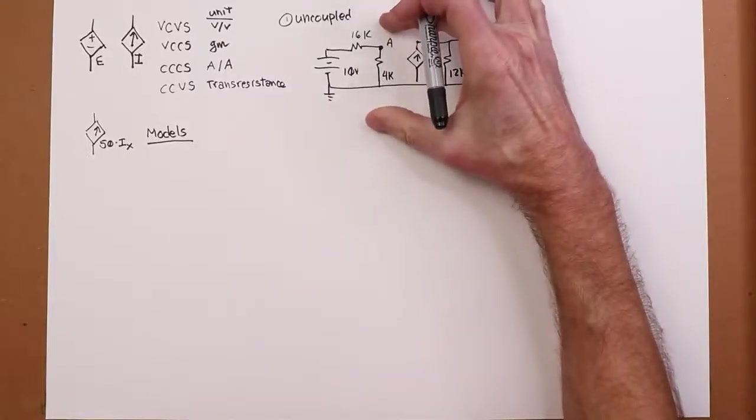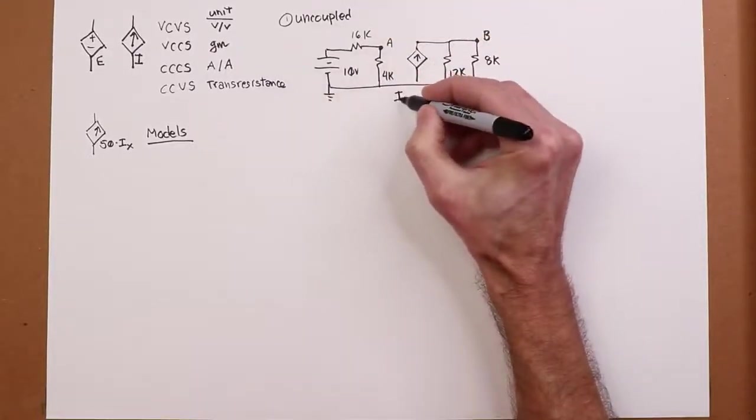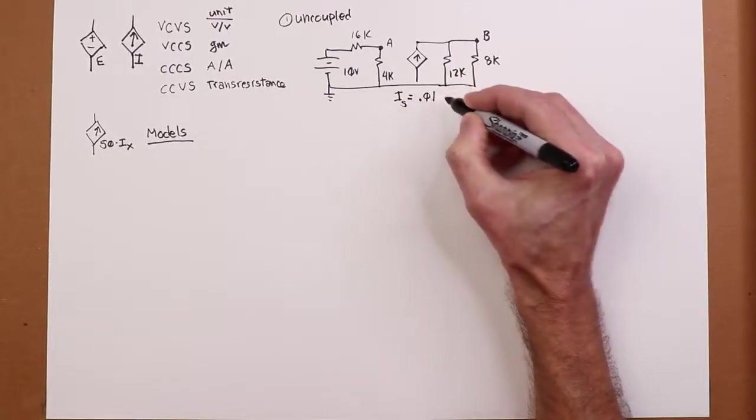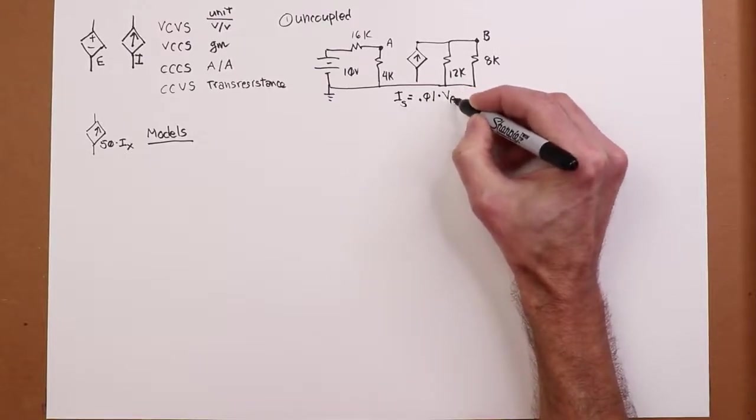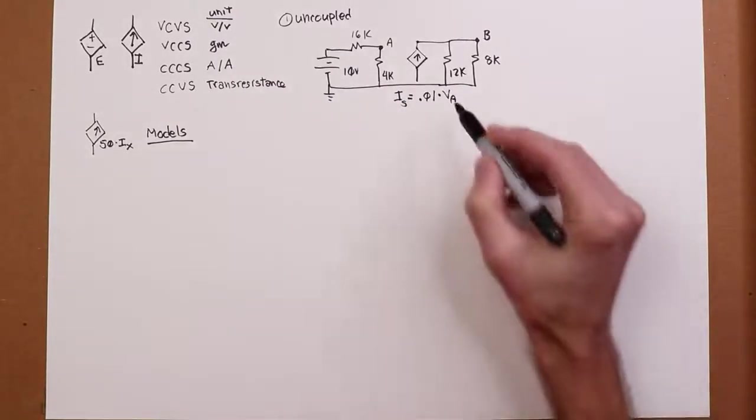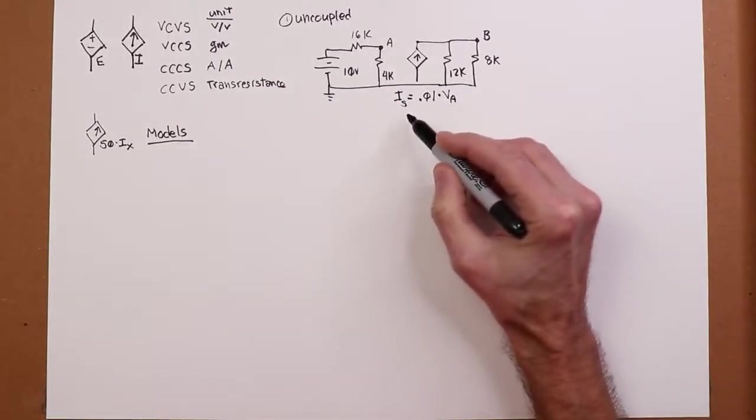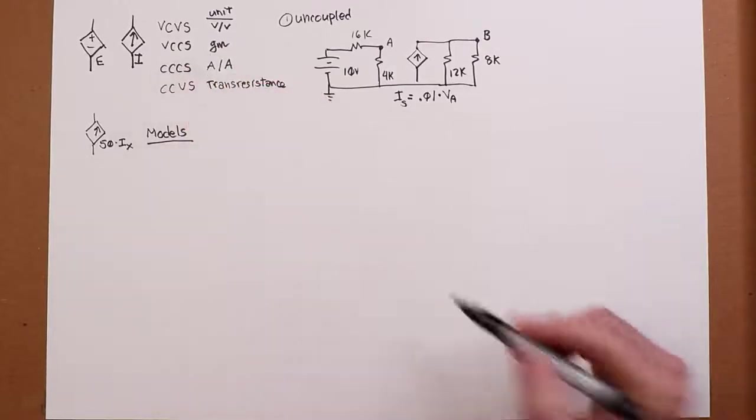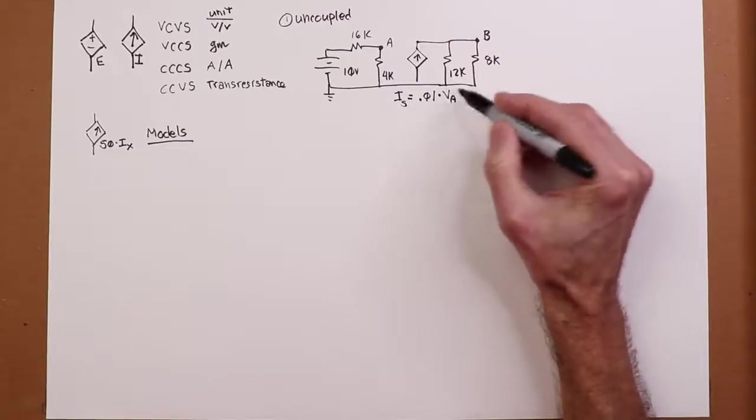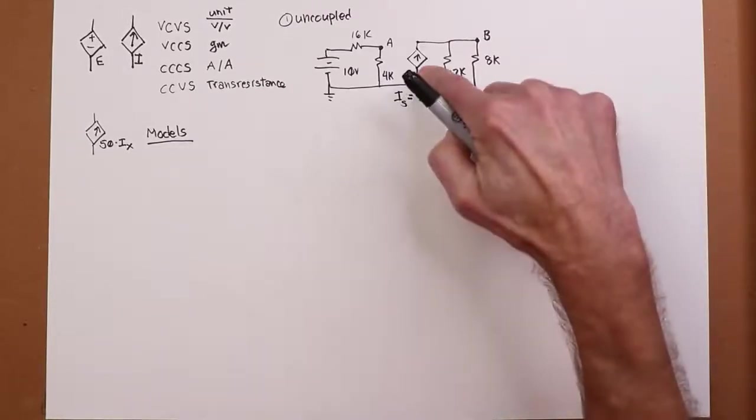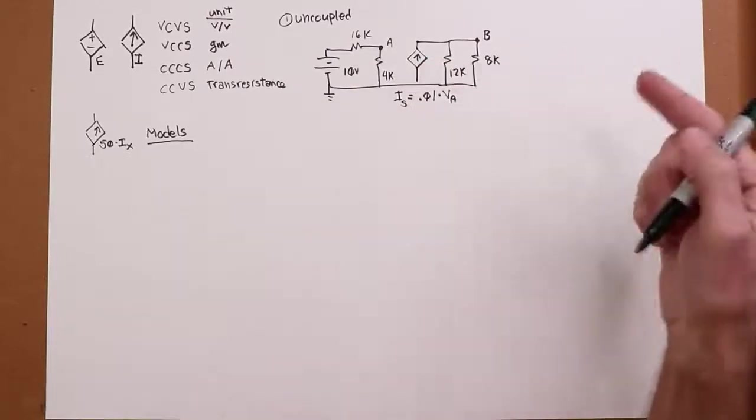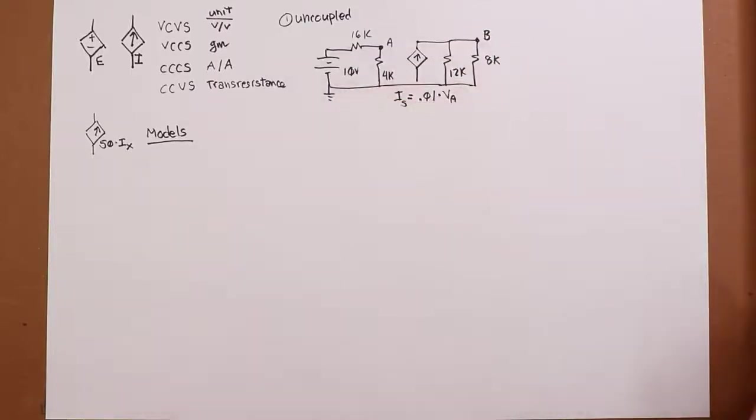And then here is the controlled source. So this is going to be a current source. And this is going to feed a couple of resistors out here. Let's make this, I'll call this point B. And we'll call, let's say a 12k and an 8k. Now the value of this current source is going to depend on the voltage node A. In other words, this voltage here across the 4k. So I'm going to say the value of this source, I'll just call it Is, is going to be 0.01 times VA.